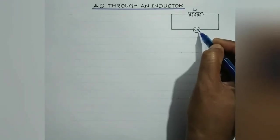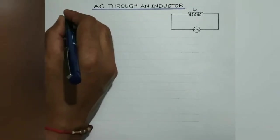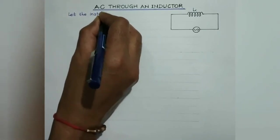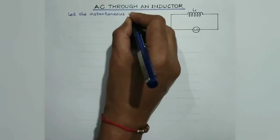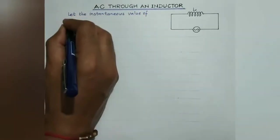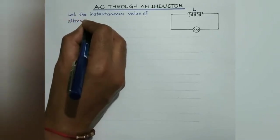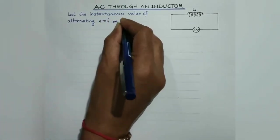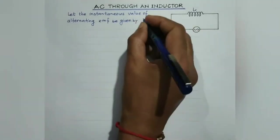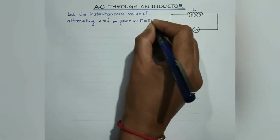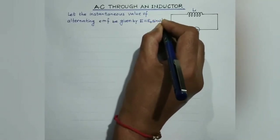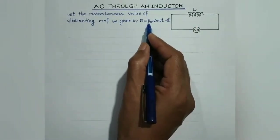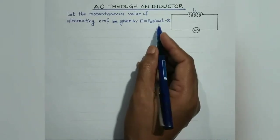This is the symbol for the source of alternating EMF. Let the instantaneous value of alternating EMF be represented by E equals to E₀ sin ωt — consider this to be equation number one. E₀ is the peak value of the alternating EMF, also known as the EMF amplitude. Omega is the angular frequency.